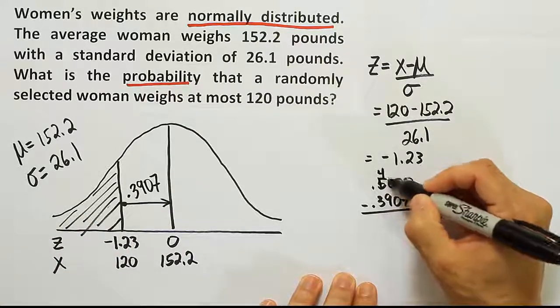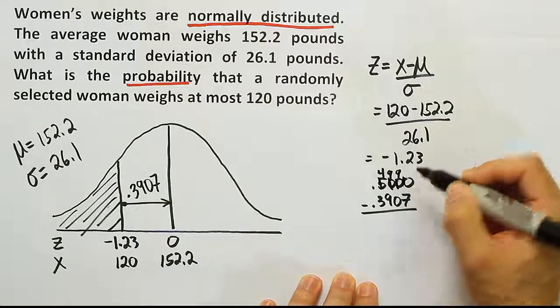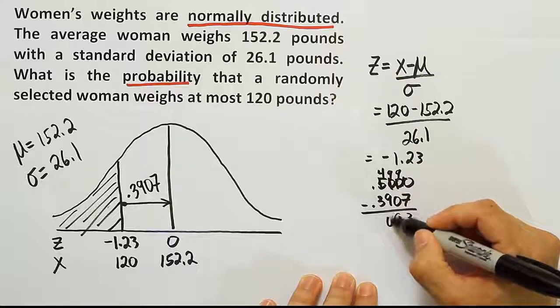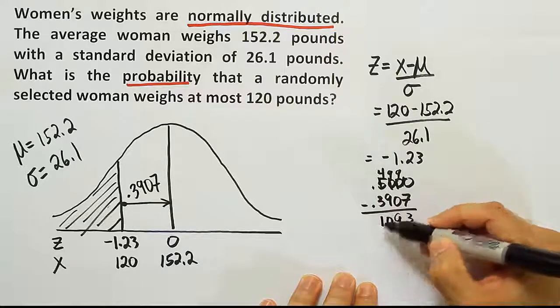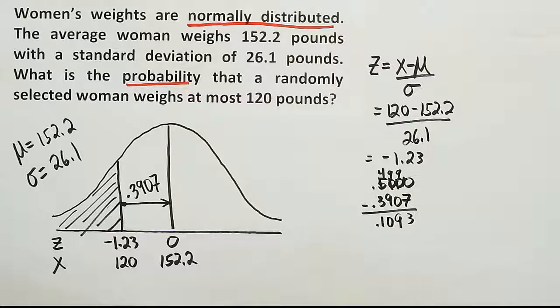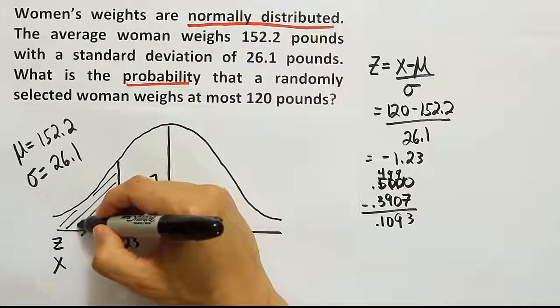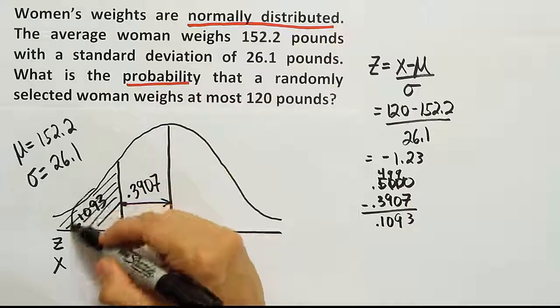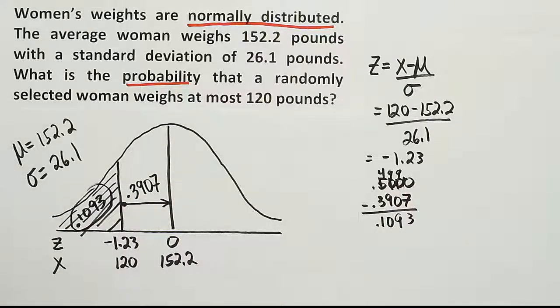Let's use a little old school borrowing here. 10 take away 7 is 3, 9 take away 0 is 9, 9 take away 9 is 0, and 4 take away 3 is 1. So we get the answer 0.1093. That's the area in the tail we're looking for. We're done.